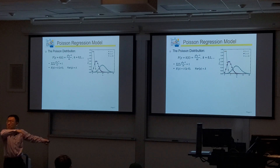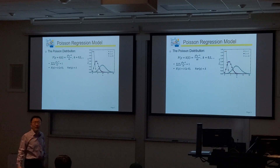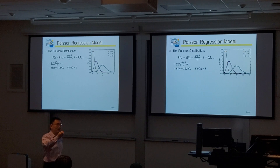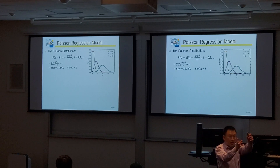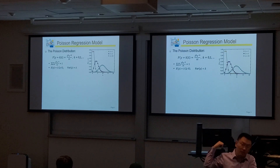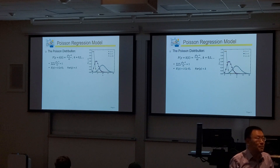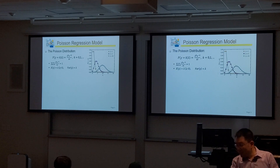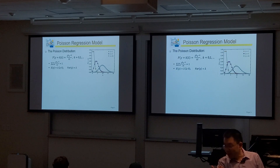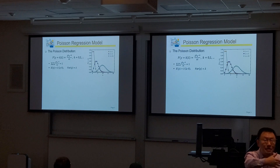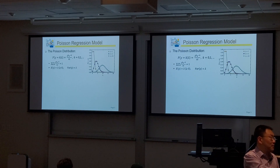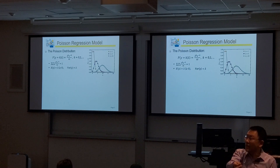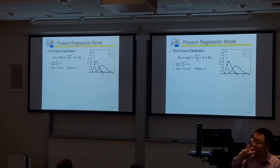That makes this a valid probability distribution — this is the Poisson distribution. In the Poisson model, the first step is that we model the values of y as following this Poisson distribution. Since it's a model, we model y as dependent on many x variables. So how do we incorporate the x variables?